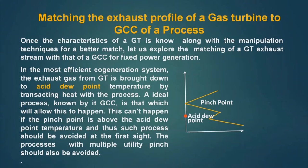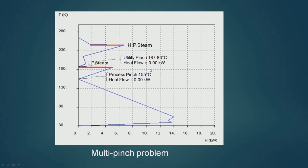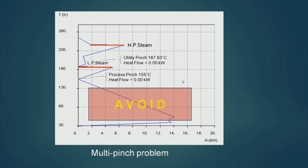Such a process should be avoided at first sight — if it happens, we should try to avoid such type of processes. A second thing is that if the process has multiple utility pinches, we should also try to avoid it. This is a GCC of a process which has got multiple pinches: one is the utility pinch where heat flow is zero, and the other is the process pinch where heat flow is also zero. If we face such a problem, we will try to avoid it for integration.